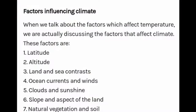The factors influencing climate include altitude, latitude, land and sea contrast, ocean currents and winds, cloud and sunshine, slope and aspect of the land, natural vegetation, and soil. These are the key influencing factors of climate that we are going to learn.